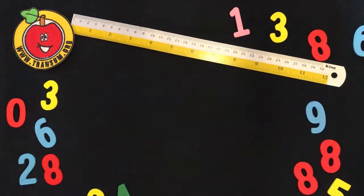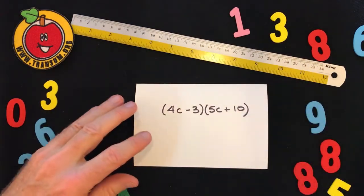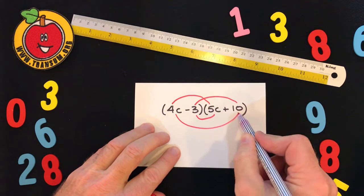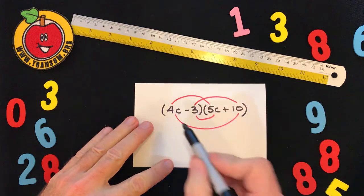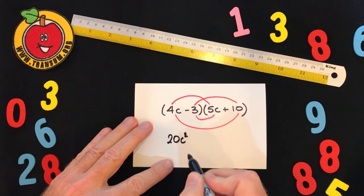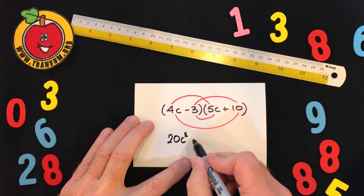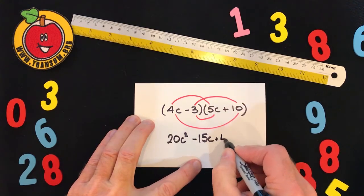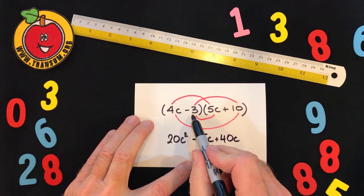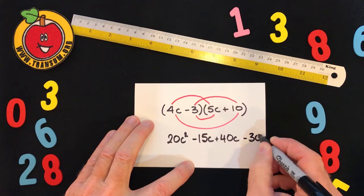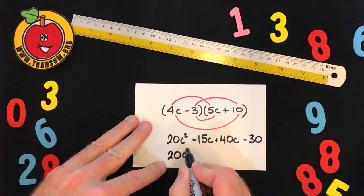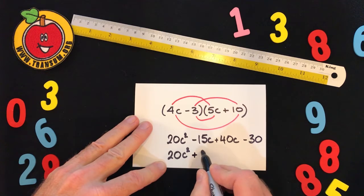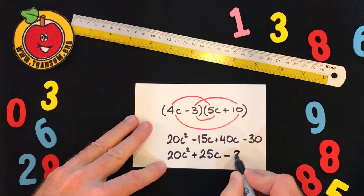Getting the hang of this now? It's all to do with that clown's face. Here's another one. Draw the eyebrows, nose, and mouth, then do the multiplications along each of the red lines. 4C times 5C is 20C squared. Minus 3 times 5C is minus 15C. Along the mouth, 10 times 4C is 40C. And finally the right eyebrow: negative 3 times positive 10 is negative 30. Collecting like terms: 20C squared, then 40C take away 15C leaves us 25C, and then negative 30 at the end.